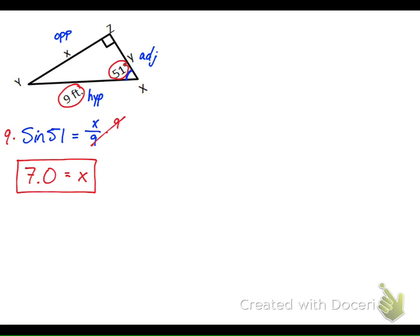Using the same picture but finding y instead of x, you have adjacent and hypotenuse, so use cosine. Cosine of 51 equals y over 9, because cosine means adjacent over hypotenuse. Multiply both sides by 9: 9 times the cosine of 51 gives 5.66, so rounding to the tenth, y equals 5.7.